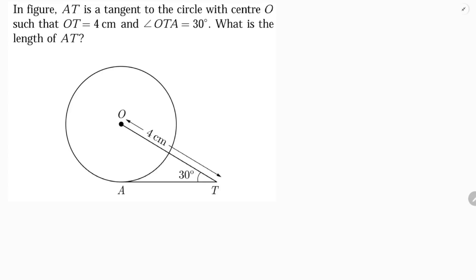In figure, AT is a tangent to the circle with center O such that OT length is 4 cm and angle OTA is 30 degrees. What is the length of AT?